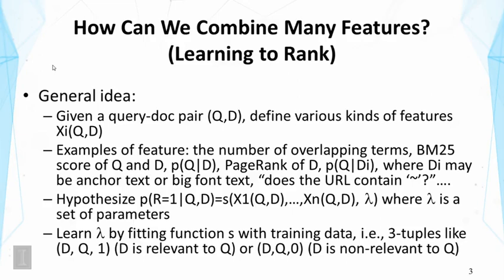The question now is how can we combine all these features, and potentially many other features, to do ranking. This will be very useful for ranking web pages — not only to improve accuracy, but also to improve the robustness of the ranking function so that it's not easy for a spammer to perturb one or a few features to promote a page. The general idea of learning to rank is to use machine learning to combine these features and optimize the weights on different features to generate the optimal ranking function.